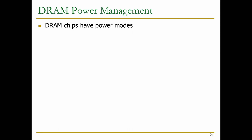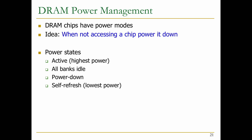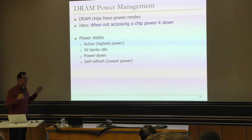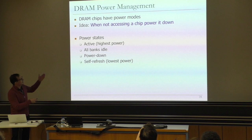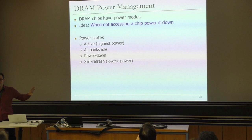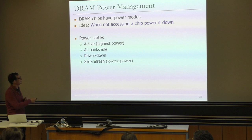Before we go into more scheduling, let's talk about power management a little bit, because this is becoming increasingly important. DRAM chips have power modes. The idea is very simple: when you don't access a DRAM chip, power it down. There are multiple different power states. Active is the highest power — when you're accessing the DRAM chip for a read or write. When not accessing, the row buffer is still active, still consuming power. All-banks-idle means the row buffer is not active in any bank. Power-down is an even more aggressive mode where you cut power to a lot of the chips, so it takes more time to power up before you can access it.